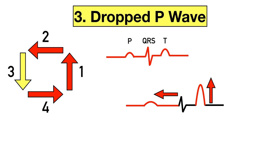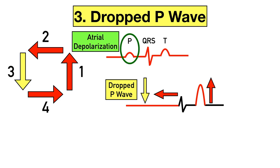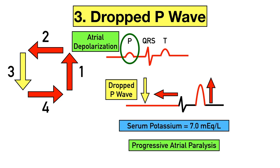Continuing counterclockwise to the down arrow: as atrial paralysis progresses, eventually the P waves may disappear, resulting in dropped P waves on the EKG. The P wave represents atrial depolarization, so as potassium levels continue to climb and atrial paralysis progresses, the P waves can disappear. Dropped P waves can be seen at potassium levels of about 7.0.